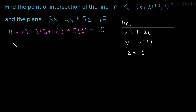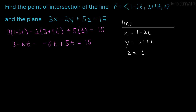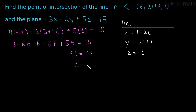Let's simplify. This is 3 minus 6t, then minus 2 minus 8t, plus 5t, equal to 15. The constant terms give 3 minus 6, which is minus 3; adding that over gives 18 on the right side. The t terms: minus 6 minus 8 plus 5 gives minus 9t. So minus 9t equals 18, and dividing by minus 9 gives t equals minus 2.